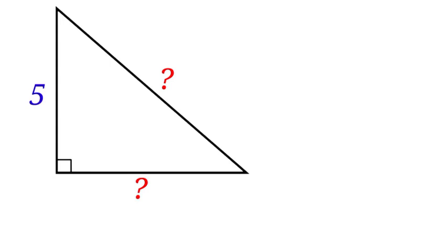Perimeter is the total distance around a shape, and to find the perimeter of this triangle, we need to know the length of the three sides. Let us call here A, here B, and here C.